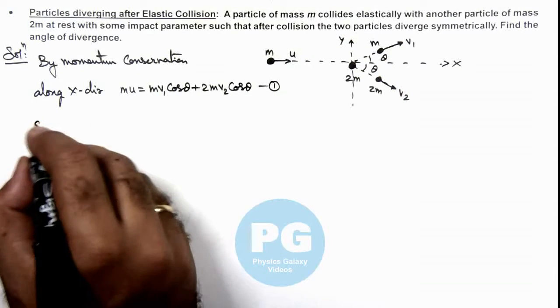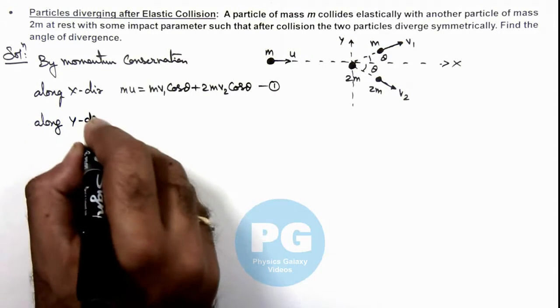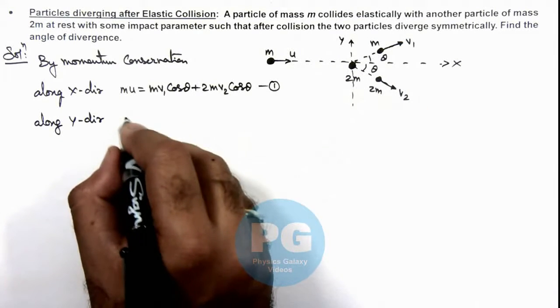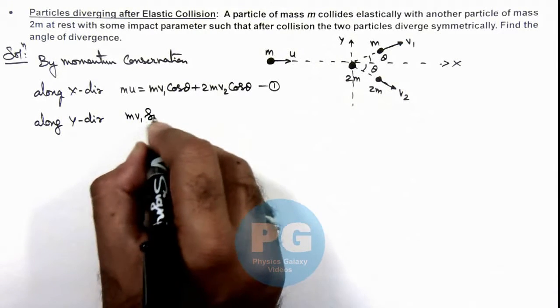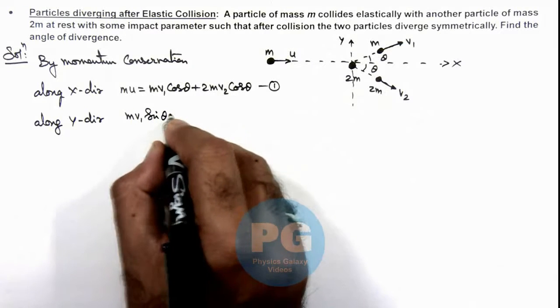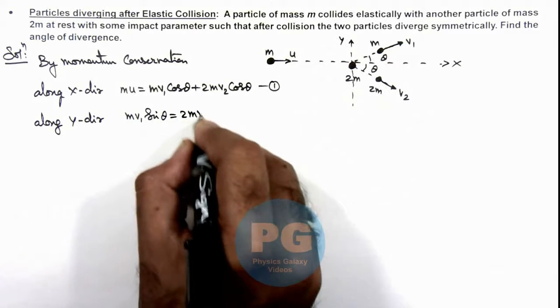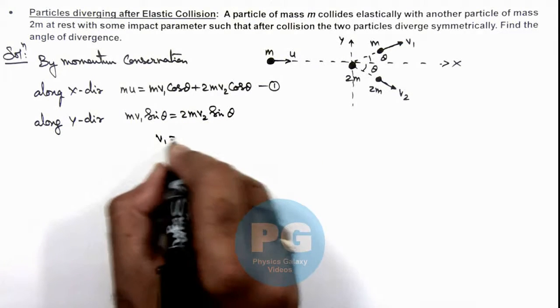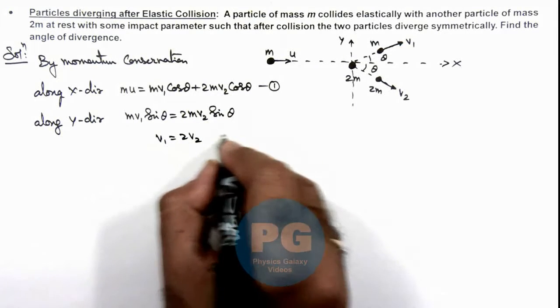Along y direction, as initial momentum was zero, final must also be zero. So we can write mv1 sine theta is equal to 2m v2 sine theta, which gives us v1 is equal to 2v2. This is our second equation.